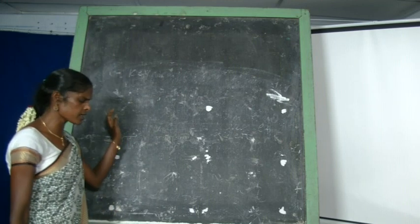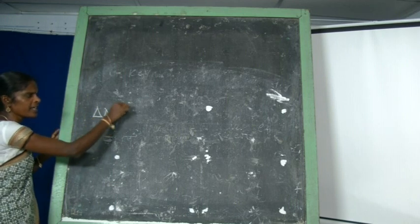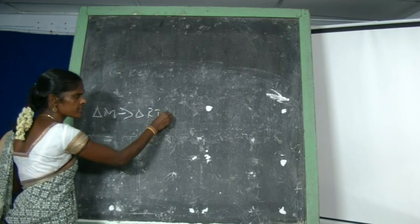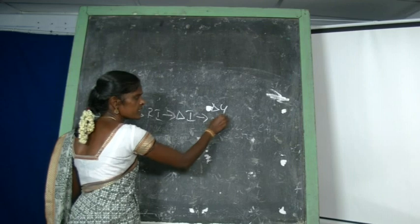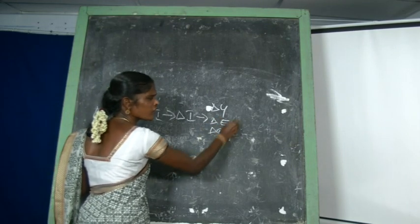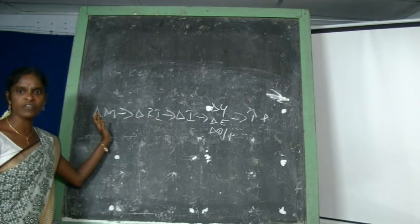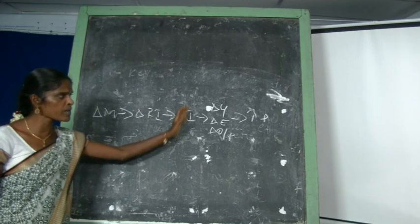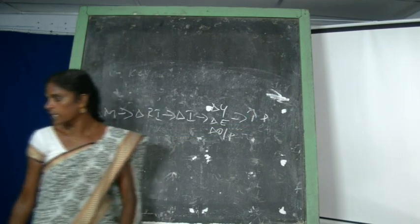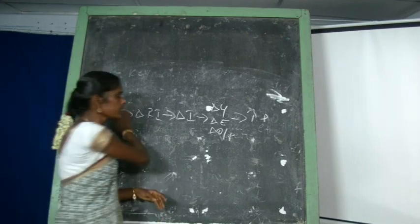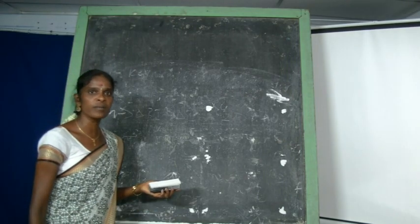Keynes's quantity theory of money and prices involves the following process: changes in the quantity of money lead to changes in the rate of interest, then changes in investment, then changes in income, employment, and output, and finally changes in the price level. Keynes reformulated this as the new quantity theory, which he explained dramatically, contrasting it with the old quantity theory.